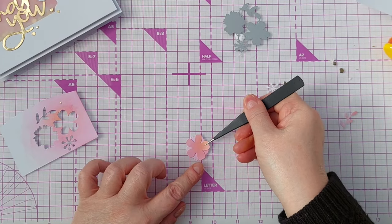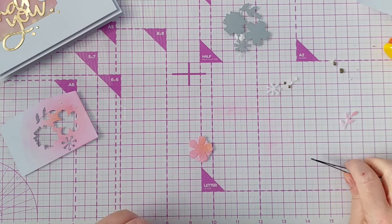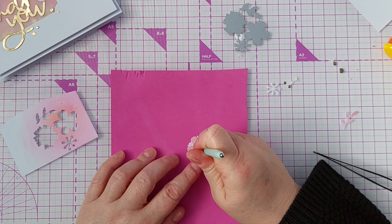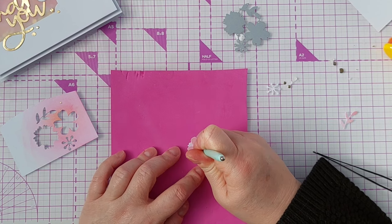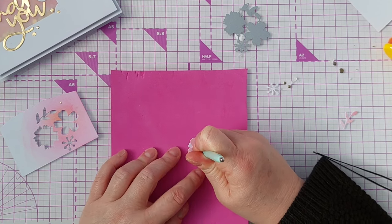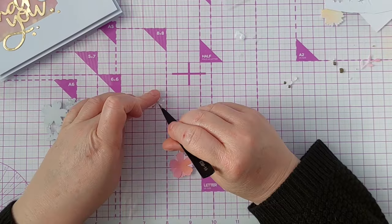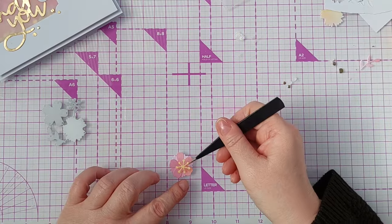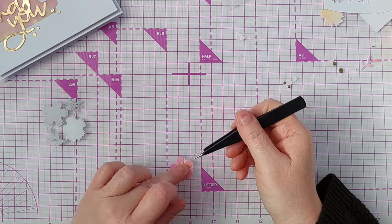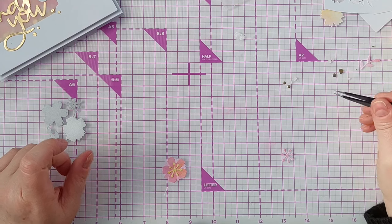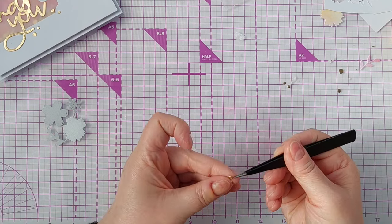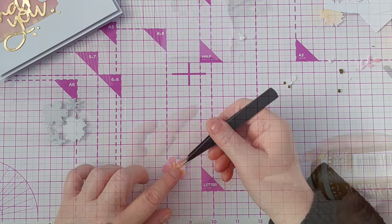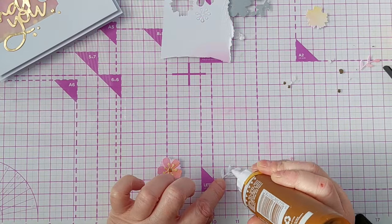Which I then assembled into flowers. I gave them a bit of extra dimension by pressing down on their center with an embossing tool. And once assembled I added them in three places on my card. I've got one larger more complex flower and two simple flowers, so there's a bit of a hierarchy going on.